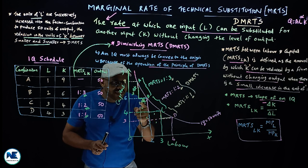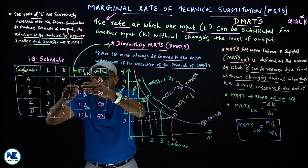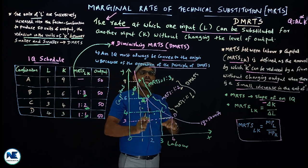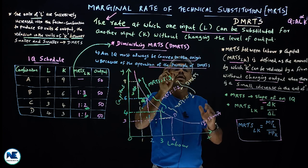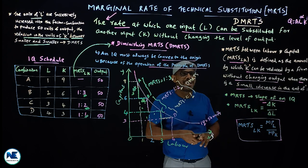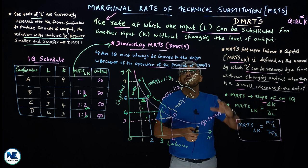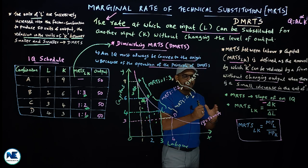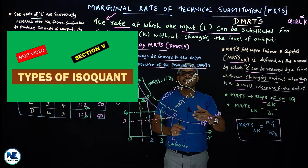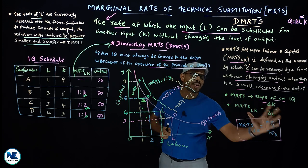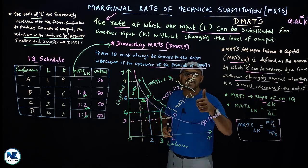The vertical distance of each triangle along the isoquant becomes smaller and smaller — that is the diminishing MRTS. This is the most crucial reason why an isoquant must always be convex to the origin. In the coming videos, we will discuss types of isoquants and properties of isoquants. Thank you.